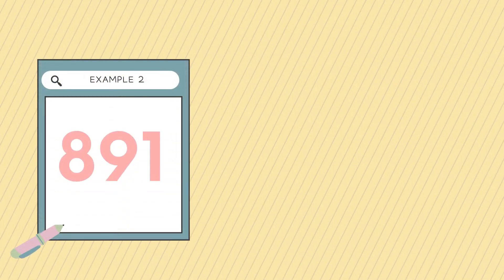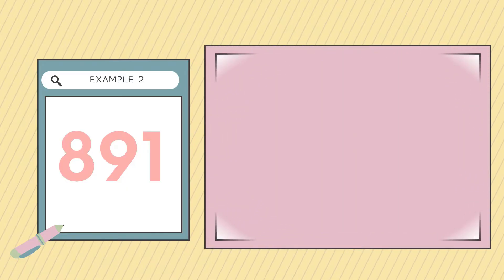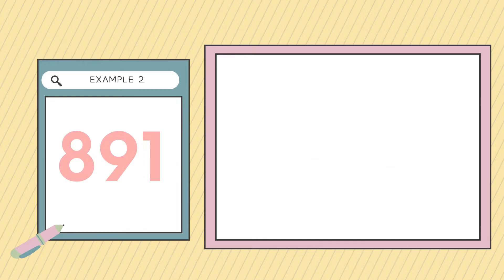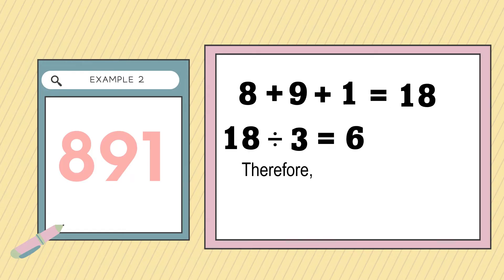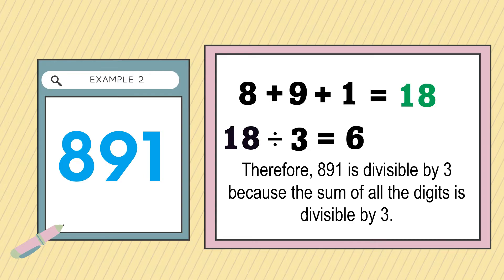Another example: 891. Let's check if 891 is divisible by 3. We're going to add all the digits of 891: 8 plus 9 plus 1. 8 plus 9 is equal to 17, plus 1 is equal to 18. Is 18 divisible by 3? 18 divided by 3 is equal to 6 and there is no remainder. Therefore, 891 is divisible by 3 because the sum of all the digits is divisible by 3.